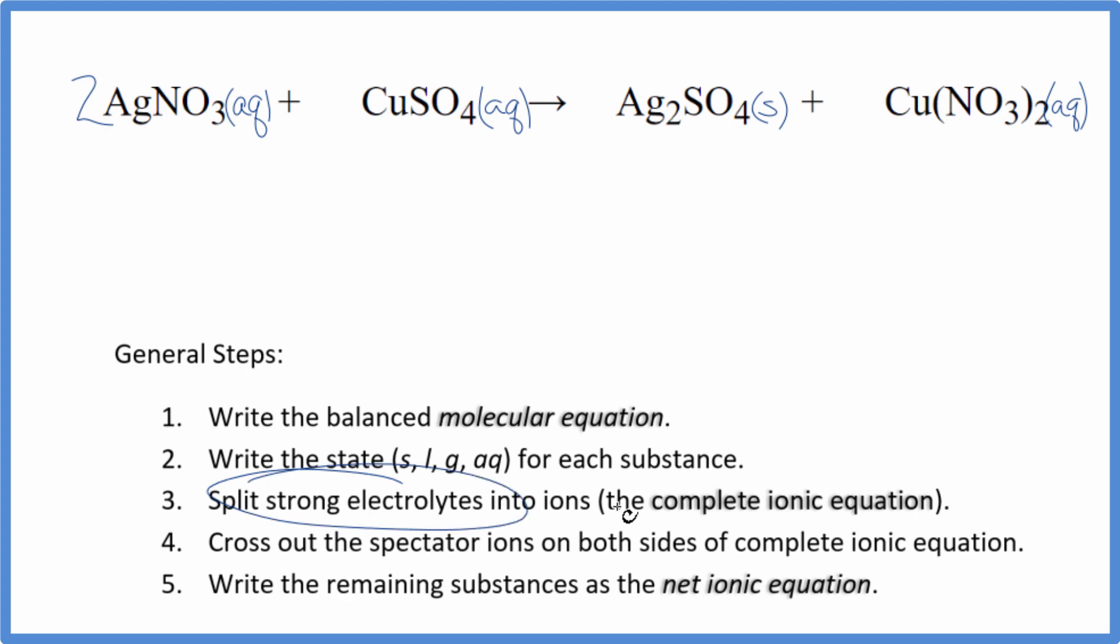Now we can split the strong electrolytes into their ions for the complete ionic equation. Silver is always going to be 1 plus, and this whole nitrate ion is 1 minus. So we'll have two of these Ag plus ions, two silver ions, and then two nitrate ions, NO3 minus. For the copper, it's a transition metal, so we don't know its charge. But we do know the sulfate. That's always 2 minus for the whole thing. So the copper is going to be 2 plus. We'll have Cu2 plus, that's the copper 2 ion, plus that sulfate ion, SO4 2 minus. So these are the reactants in our net ionic equation.